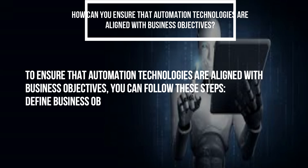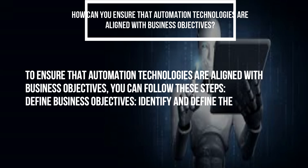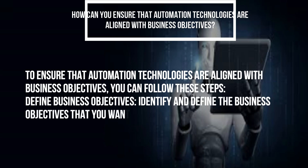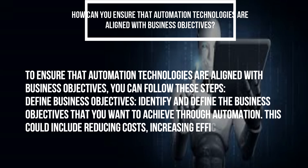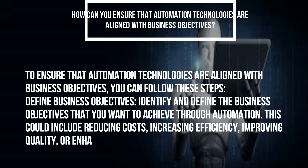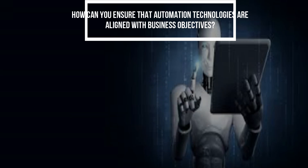Define business objectives: identify and define the business objectives that you want to achieve through automation. This could include reducing costs, increasing efficiency, improving quality, or enhancing customer experience.